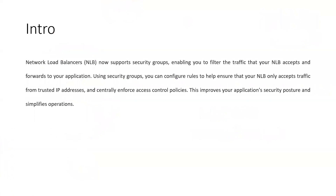When we talk about security groups, we can have them at the instance level. Suppose we have an EC2 instance with a web server — we need inbound rules like HTTP port 80 to be open in order to allow inbound traffic. But now, instead of defining those rules only at the instance level, we can have a double layer of security: at the instance level and also at the Load Balancer level. The Network Load Balancer will accept traffic and filter based on IP or port number, forwarding only what you want to your application. It helps ensure the NLB only accepts traffic from trusted IPs, improving application security and simplifying operations since you define inbound policies at the Load Balancer level.